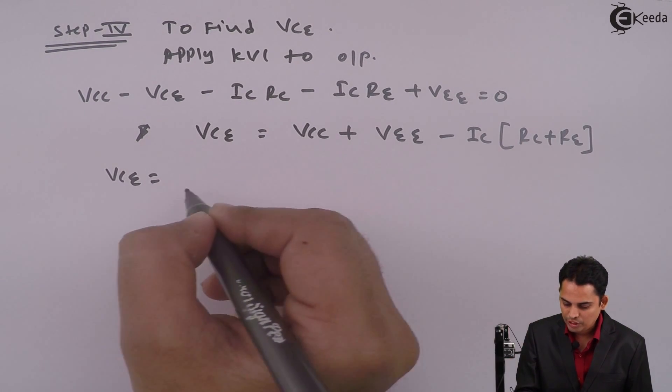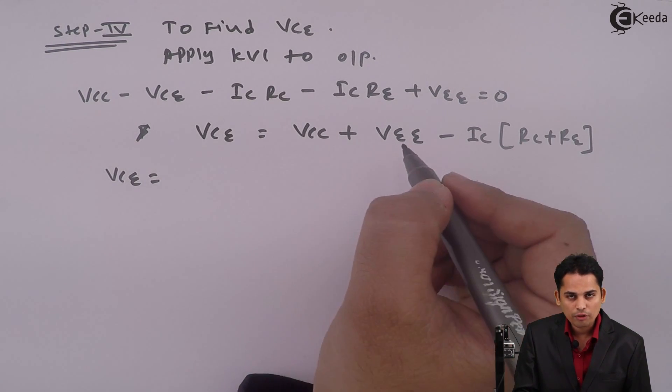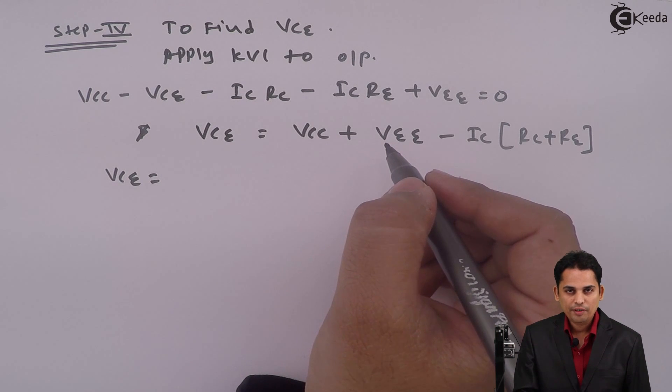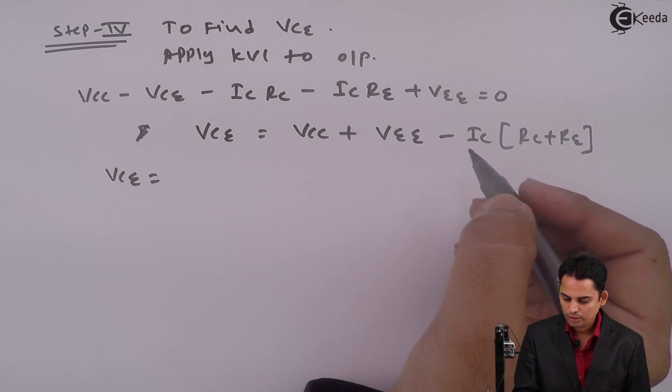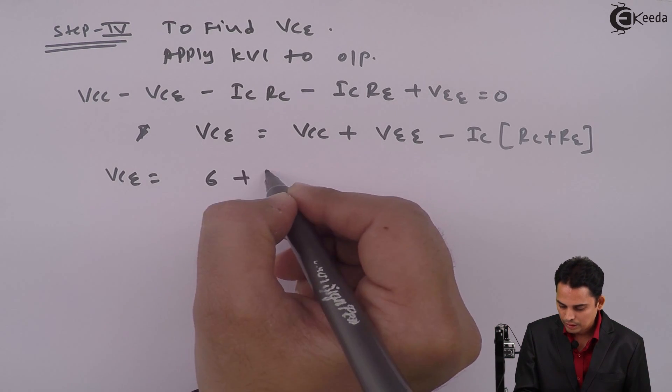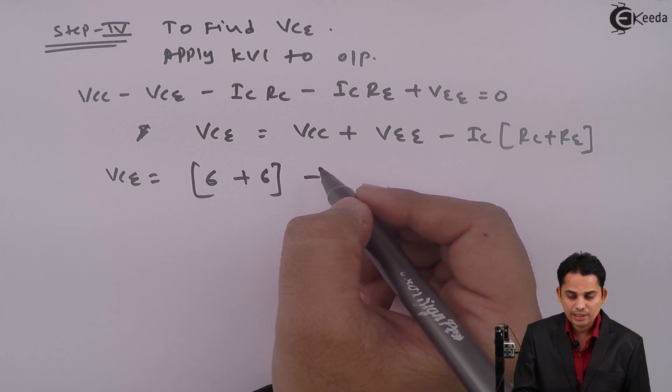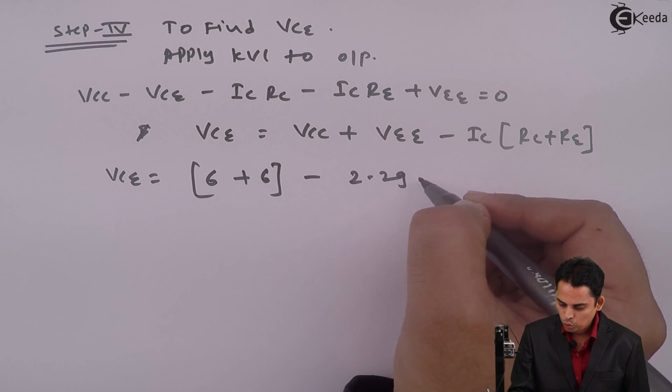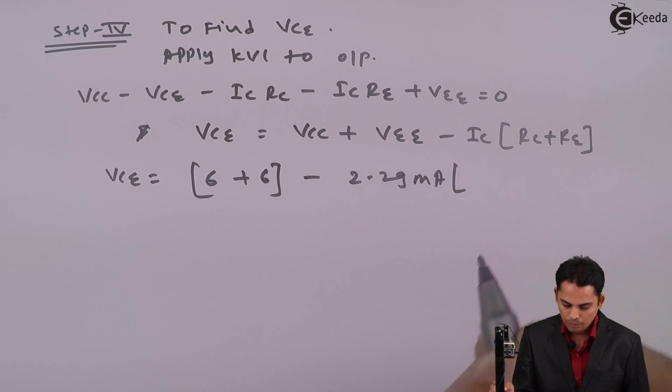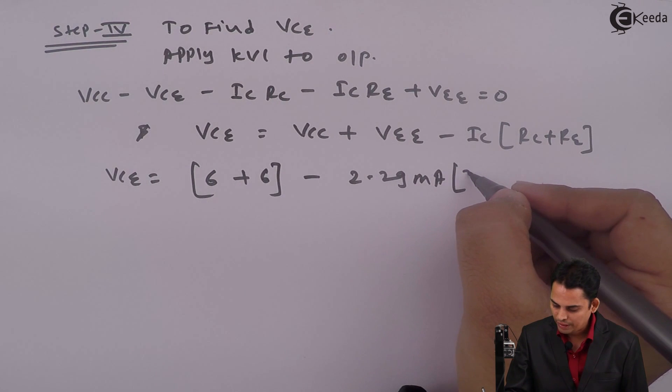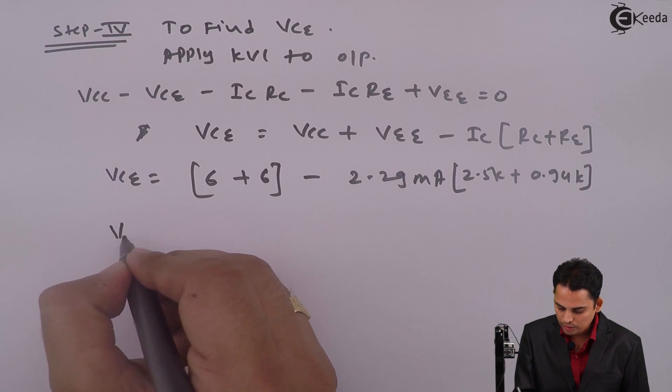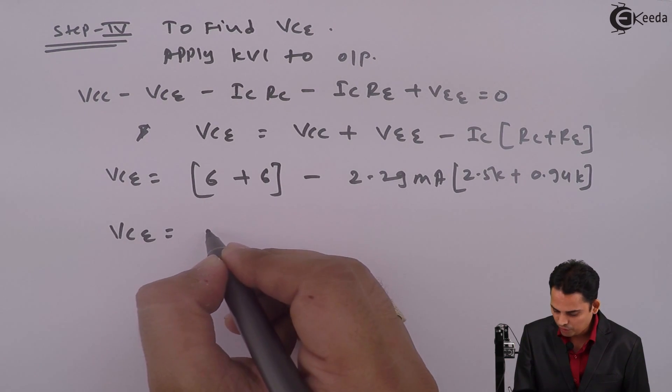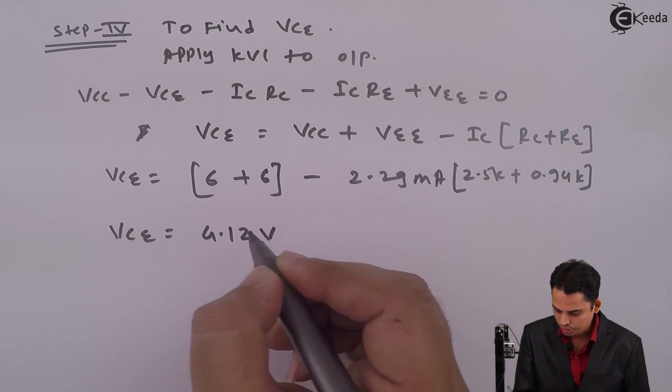Substitute the values, we will get VCE, VCC is 6 volts plus VEE is 6 volts. So it is 6 plus 6 minus IC is 2.29 milli amperes multiplied by RC is 2.5 K plus RE is 0.94 K. If we solve this, VCE is equal to 4.12 volt.